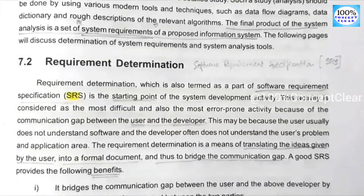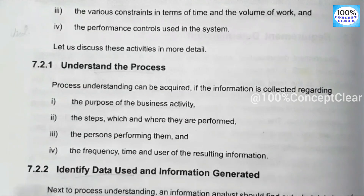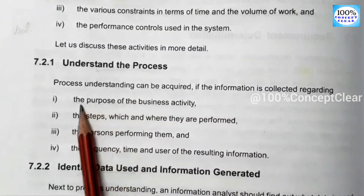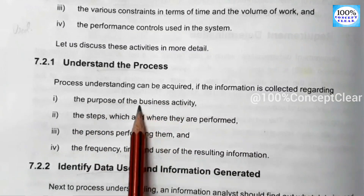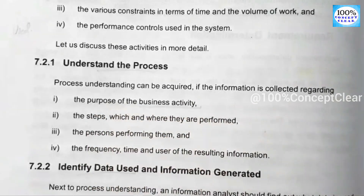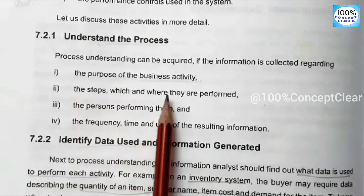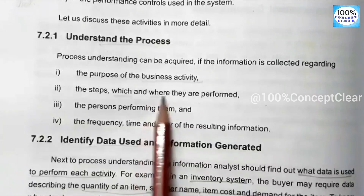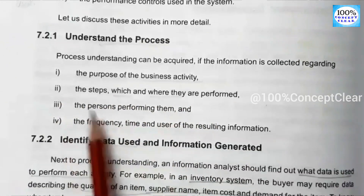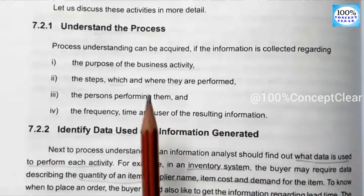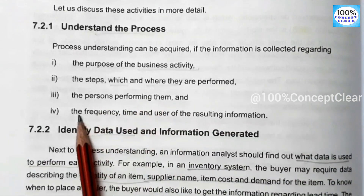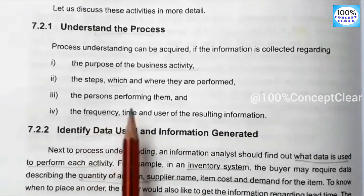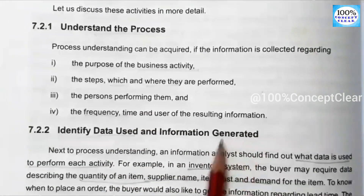The process of requirement determination has four steps. The first step is to understand the process — that is, the purpose of the business activity, the steps which are performed and where they are performed, and the persons performing them, as well as the frequency, time, and use of the resulting information.